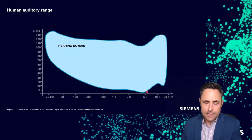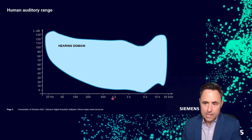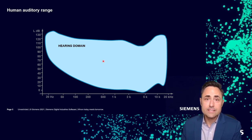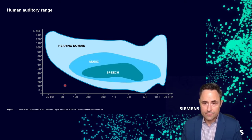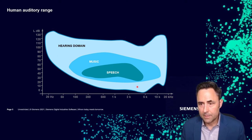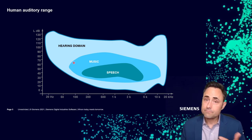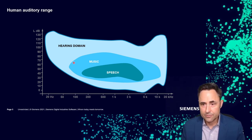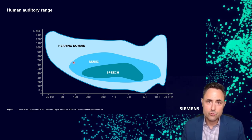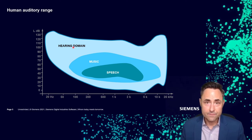If I took the human hearing domain and put it in a blue shape, with frequency on the horizontal axis and level or amplitude on the vertical axis, this shape represents everything we can hear inside the blue area. Outside it, we cannot hear. Music and speech are subsets of this. What does that overall shape remind you of? The most popular answer is the map of the contiguous United States — and that's a useful model for describing features of our hearing.